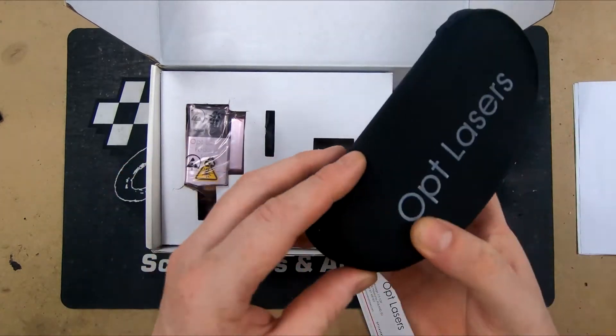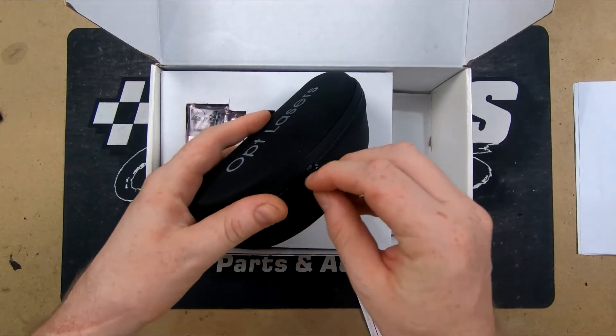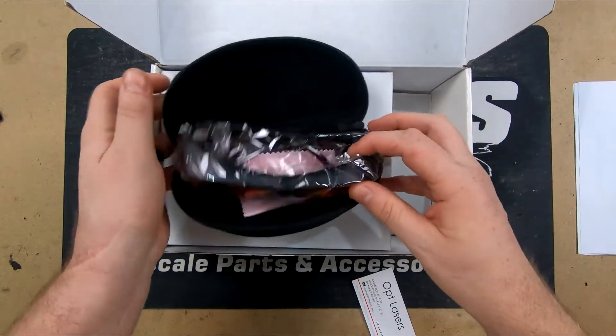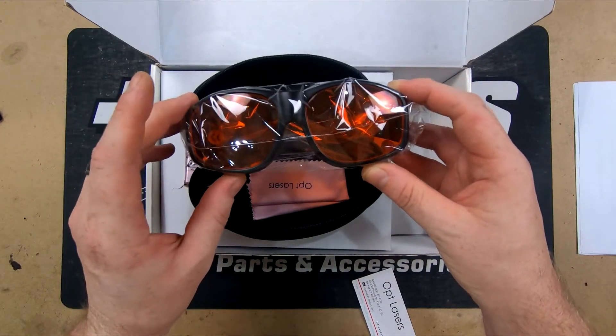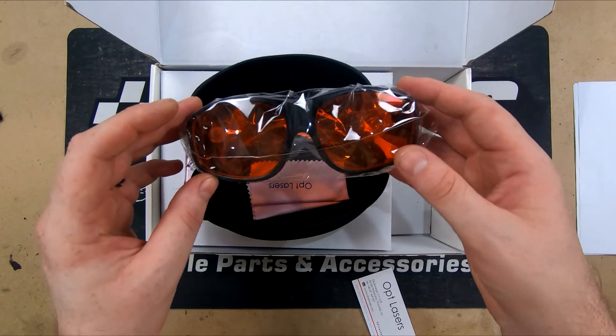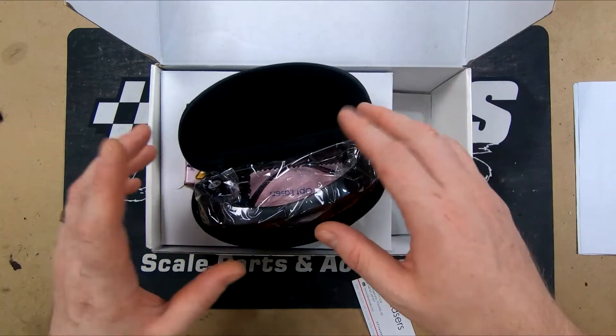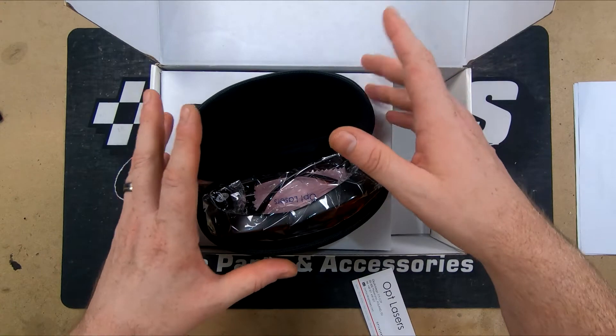First up we'll start with this package here which is going to be our little glasses. My set of glasses that are actually the correct color. You see a lot of the Chinese kits come out with green glasses and they're not actually rated for the wavelength that they're running on, so that's nice just to be aware of if you're buying another kit.